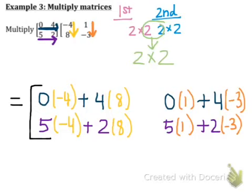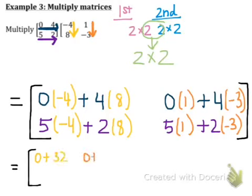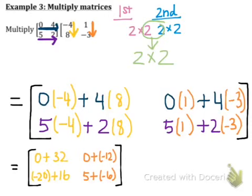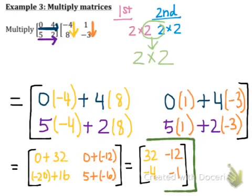Computing each element: zero times negative four is zero, plus four times eight is 32. Zero times one is zero, plus four times negative three is negative 12. Five times negative four is negative 20, plus two times eight is 16. Five times one is five, plus two times negative three is negative six. Combining: zero plus 32 is 32; zero plus negative 12 is negative 12; negative 20 plus 16 is negative 4; and five plus negative six is negative one. That is matrix multiplication.